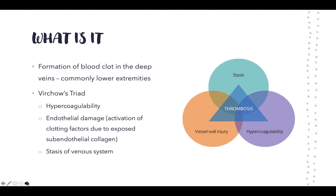DVT is quite a common condition. It is the formation of a blood clot in the deep veins, commonly presenting in the lower extremities. In terms of what causes it, it's easy to remember through Virchow's triad: stasis, hypercoagulability, and vessel wall injury.